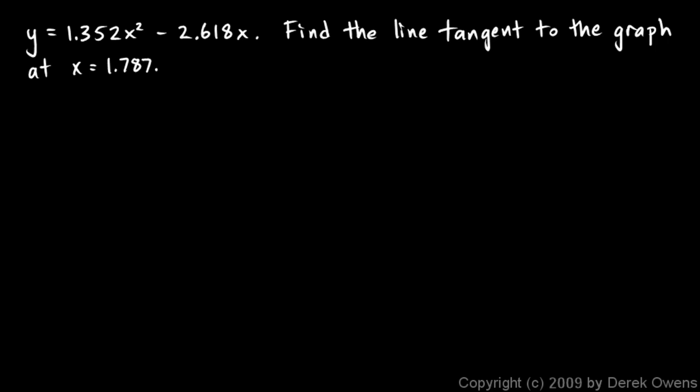One more example. In the real world, you don't often get numbers that work out to nice round numbers like in math class. A famous mathematician said there are two types of numbers: real numbers — the kind you run into designing a circuit for a cell phone or an airplane wing — and fake numbers, the nice round ones from math class. We have y equals 1.352x squared minus 2.618x. This is a parabola, and we want to find the line tangent to the graph at x equals 1.787. All numbers are given to three decimal places, so I'll give my answer to three decimal places, in y equals mx plus b form.